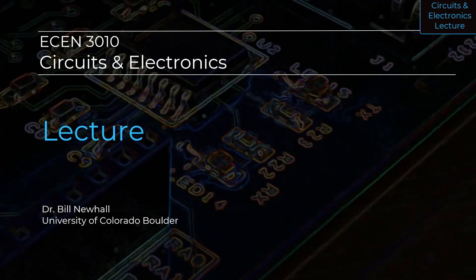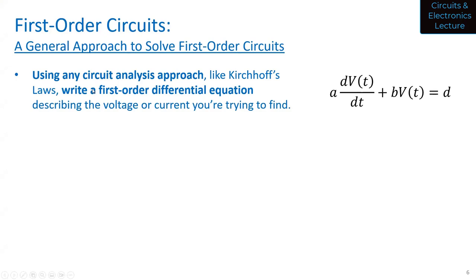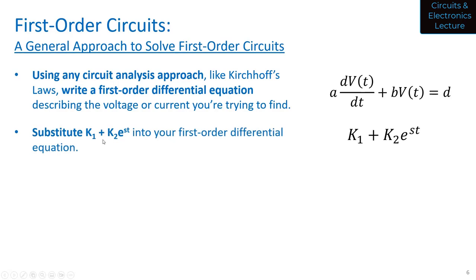Today I wanted to continue on with first-order circuits and take a couple steps back to remind you what we talked about last time. I talked about two approaches to solve first-order circuits: first was the general approach, which we went through with an example of an RC circuit, and then the initial and final value approach, which we will cover today. For the general approach, you write KVL, KCL, Ohm's law, voltage division — whatever you have in your toolbox — to create the first-order differential equation that describes the voltage or current you're looking for, and then you substitute in the general solution k1 plus k2 e to the st.